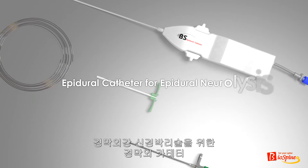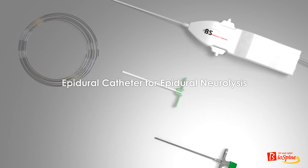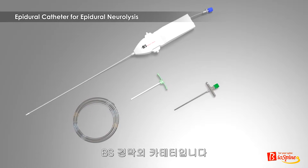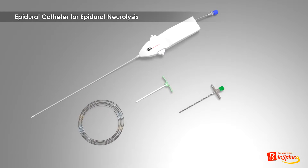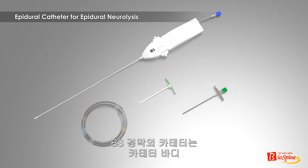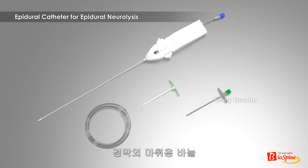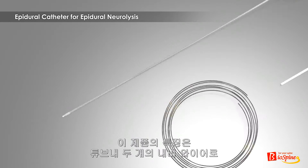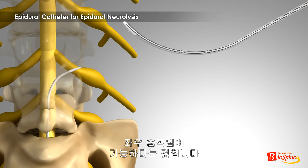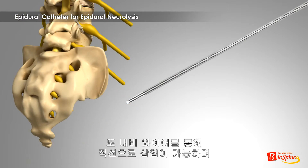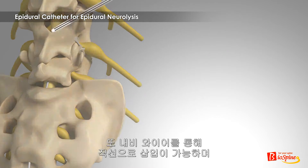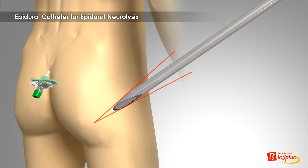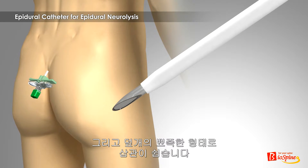Epidural catheter for epidural neurolysis. Our company's product for epidural neurolysis is the BS Epidural Catheter, which includes the catheter body, trocar, needle, sheath, and guide wire. This product set is characterized by two-way navigation via two Navi wires in the inserting tube, good straightness by the straight Navi wire, smooth puncture without resistance by the sharp blade of the trocar needle, and smooth insertion by the tapering end of the sheath.